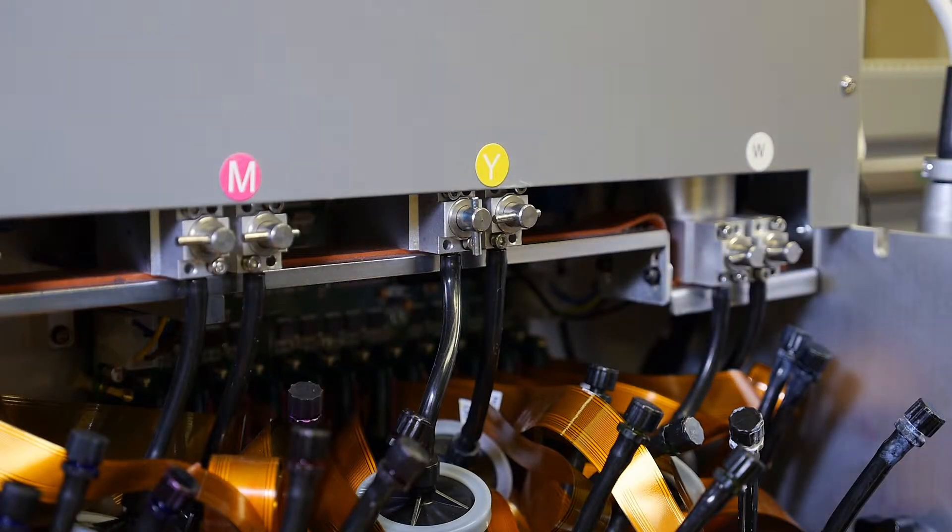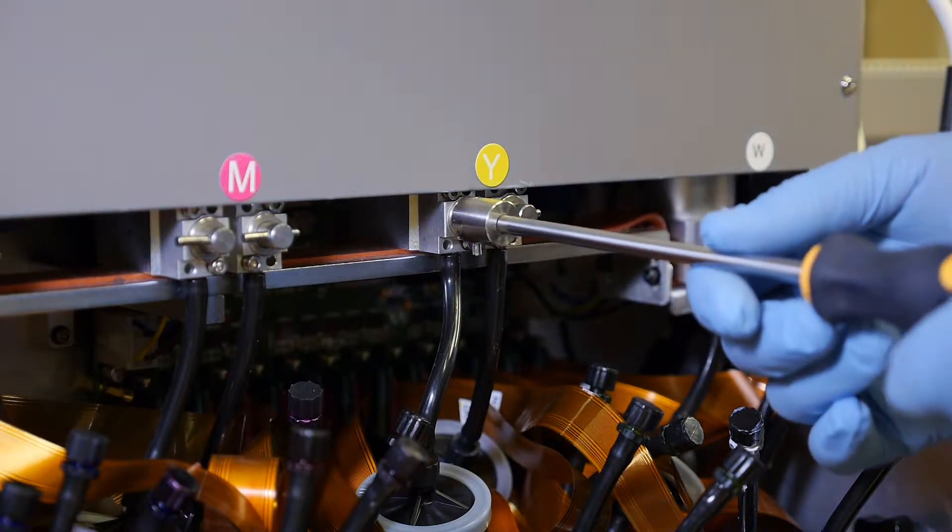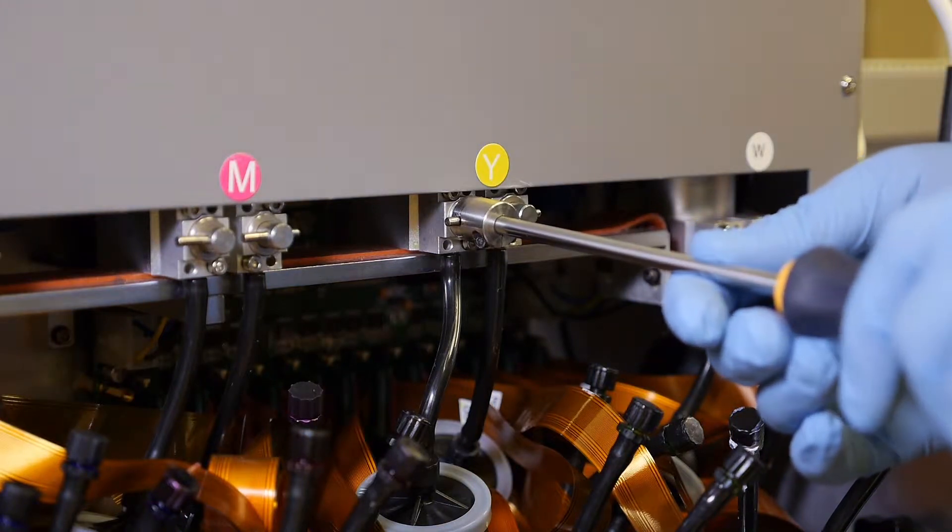Close the sub-tanks. Make sure to turn the sub-tank valve 90 degrees into a horizontal position.